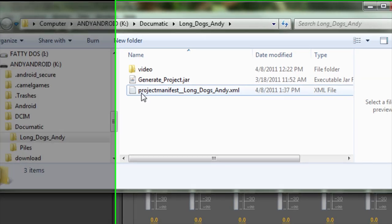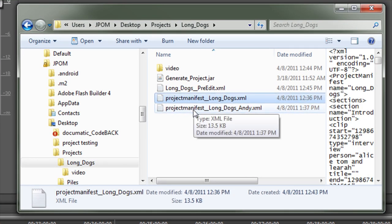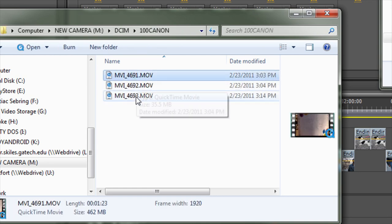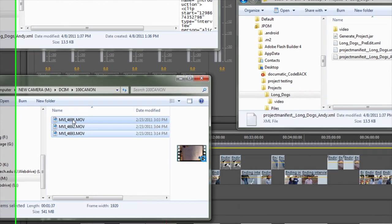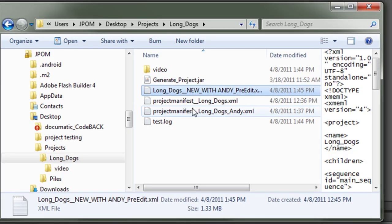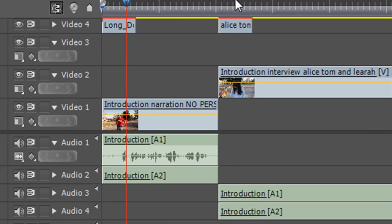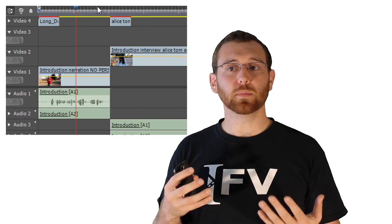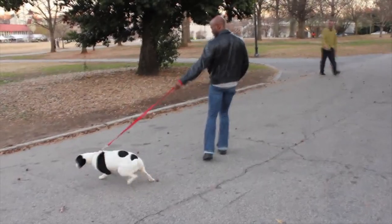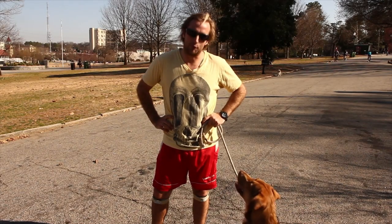If you wanted to collaborate with other documentarians on a similar project, Documatic also has a built-in merging feature. You just drag each group's raw video and project manifest files into the same project folder. And when the project generator is run, it intelligently meshes the clips from all the collaborators into a single sequence. The number of simultaneously merged projects is theoretically limitless. Long Dogs was actually created by merging three separate projects into one single sequence.